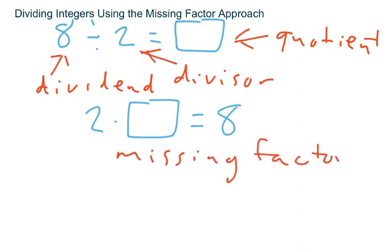And it's pretty easy to see that what goes in the box this time is a 4. 2 times 4 is 8. 8 divided by 2 is 4. This is basically the definition of division and a very basic way to start the concept of division at whatever level you're looking at.